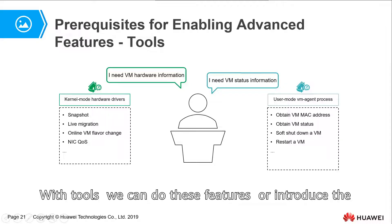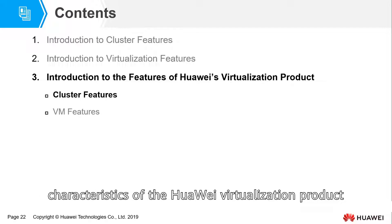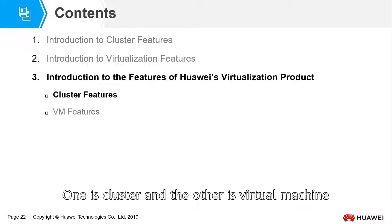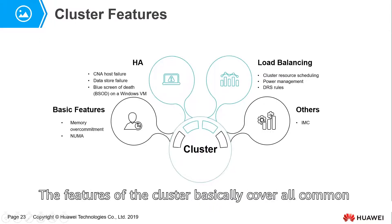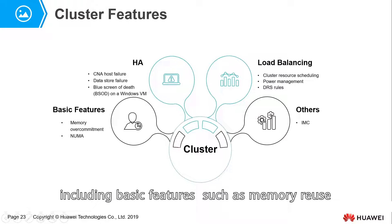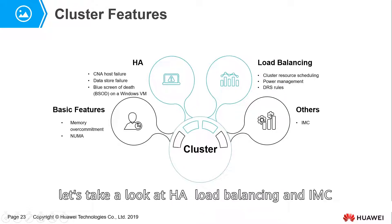With tools installed, we can use these features. The characteristics of Huawei's virtualization product are introduced from two perspectives: cluster and virtual machine. The cluster features basically cover all common virtualization features, including basic features such as memory reuse. We talked about NUMA previously. Now let's look at HA, load balancing, and iMotion.